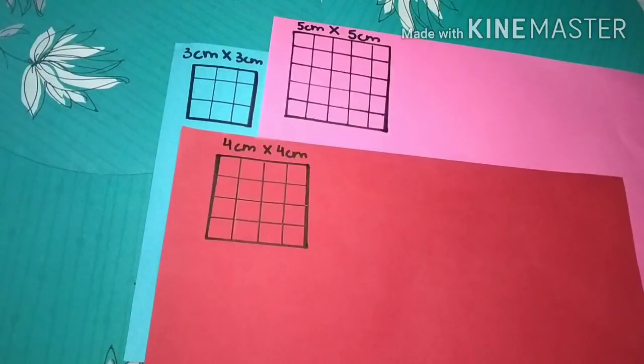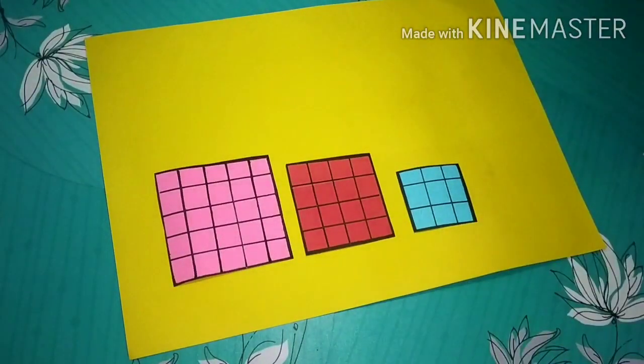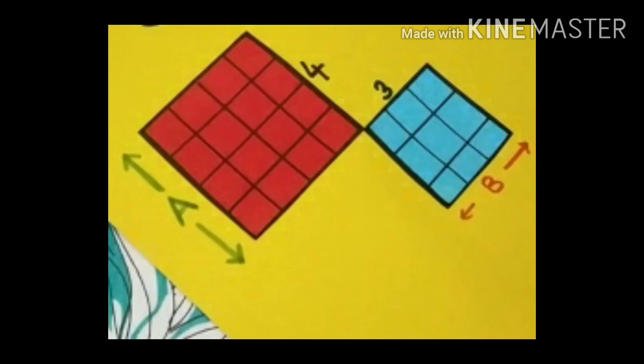To prove this Pythagorean theorem, put the square with side 4 centimeters across the altitude and square with side 3 centimeters across the base.